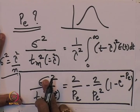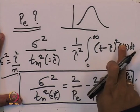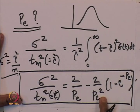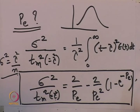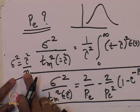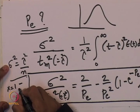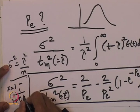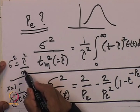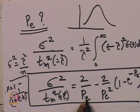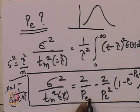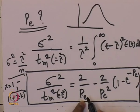Once I get sigma squared from the E curve, that gives me Pe. Once you have Pe, you have characterized the flow pattern. The next step — which we will see in the next lecture — is to get the conversion in terms of Pe, analogous to how we got x = 1 minus 1/(1 + tau_i × k)^n from n in the tanks-in-series model. Thank you very much.